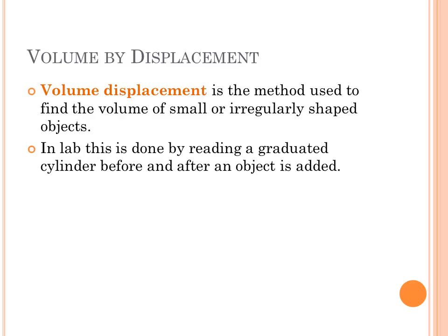With a graduated cylinder, we put an object in there. We measure the volume of water in the cylinder before we add the object and after. And the difference is the volume of that particular object.